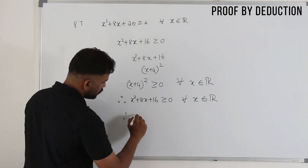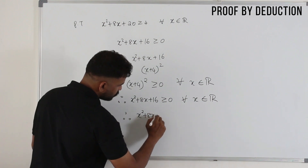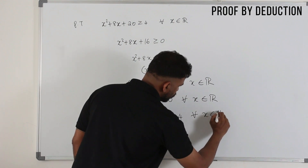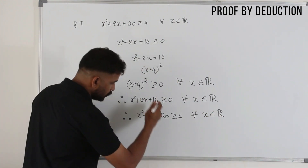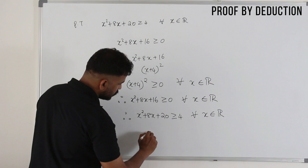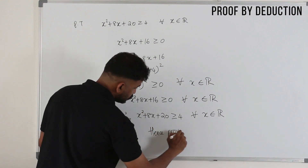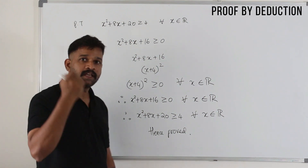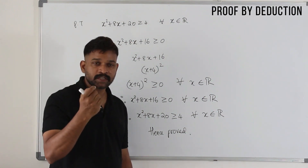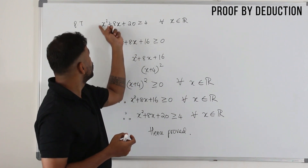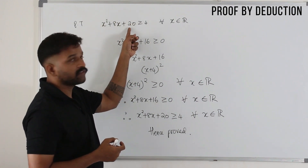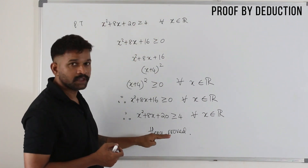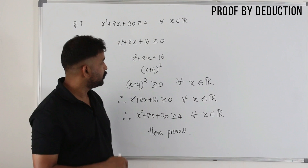Therefore, x squared plus 8x plus 20 is greater than or equal to 4 for all x belonging to R. Write the statement of proof, and for the conclusion just write hence proved. You are going to see past paper questions like this — you'll be given some expression in x, something else on the other side, collect everything to one side and prove.